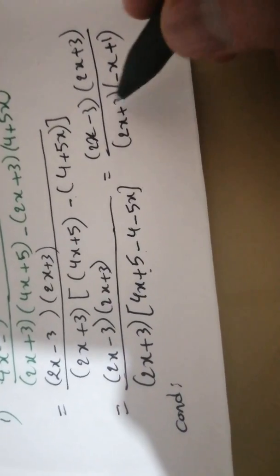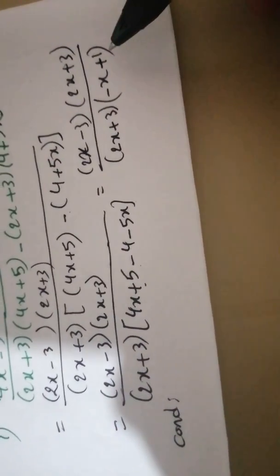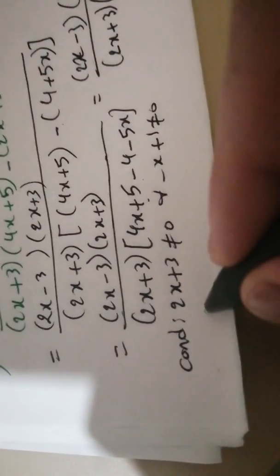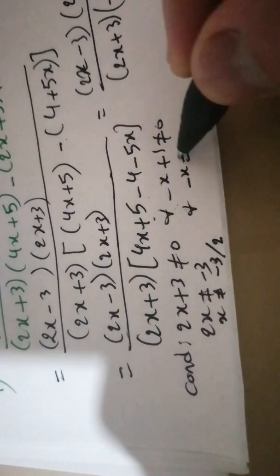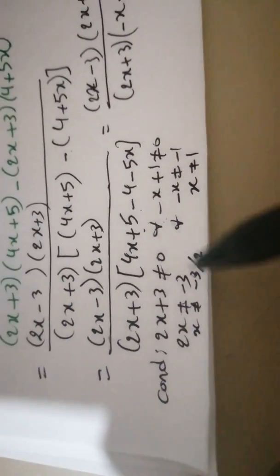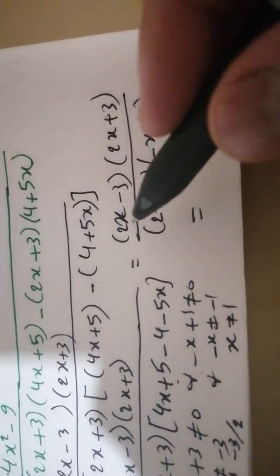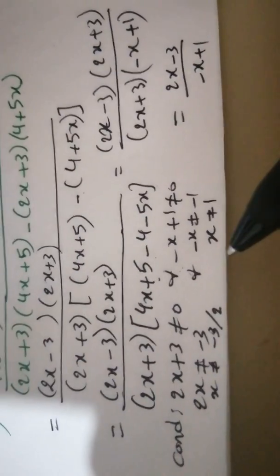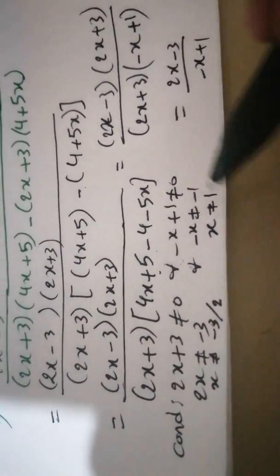Now we have to state the condition: the denominator does not equal 0. So (2x plus 3) does not equal 0 and (minus x plus 1) does not equal 0. This gives x does not equal minus 3 over 2, and x does not equal 1. Now we can simplify (2x plus 3) by (2x plus 3) to get (2x minus 3) over (minus x plus 1). The domain of definition is the set of real numbers except minus 3 over 2 and 1.